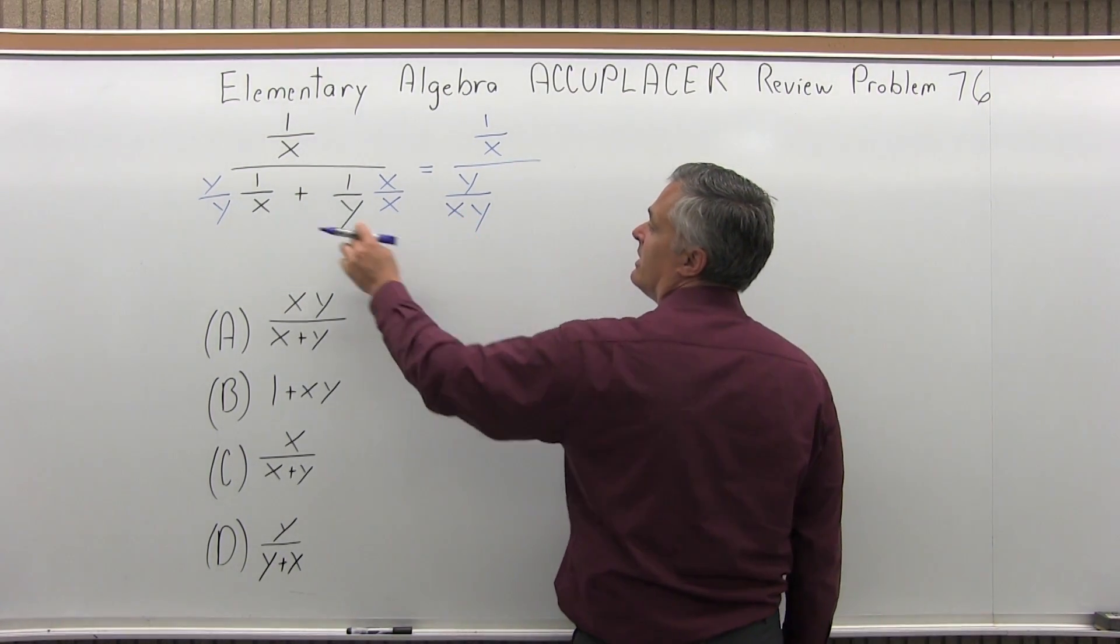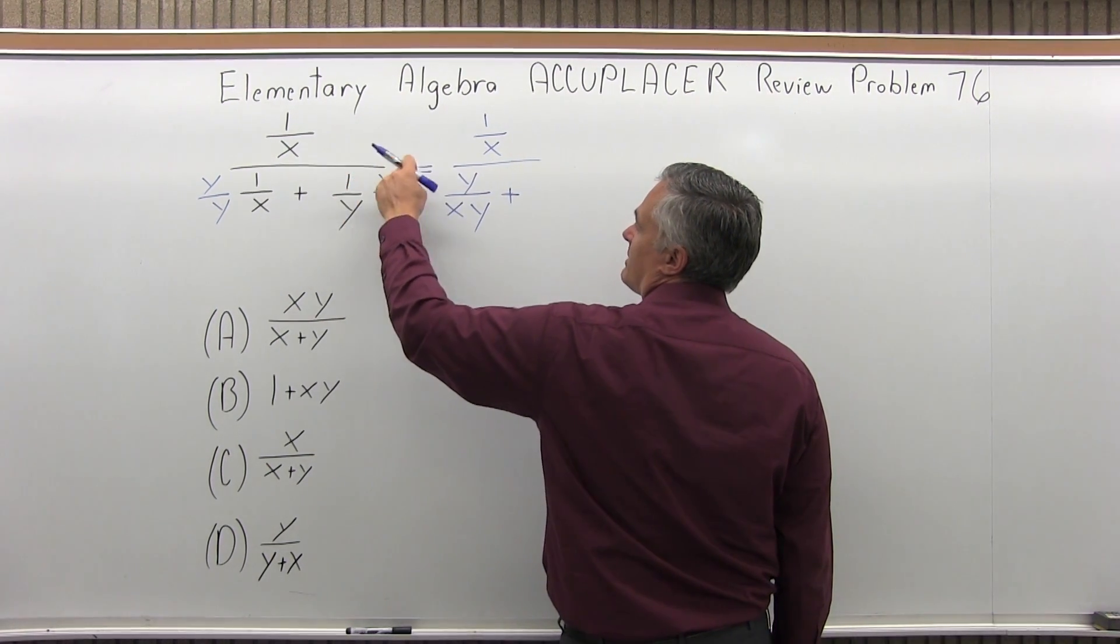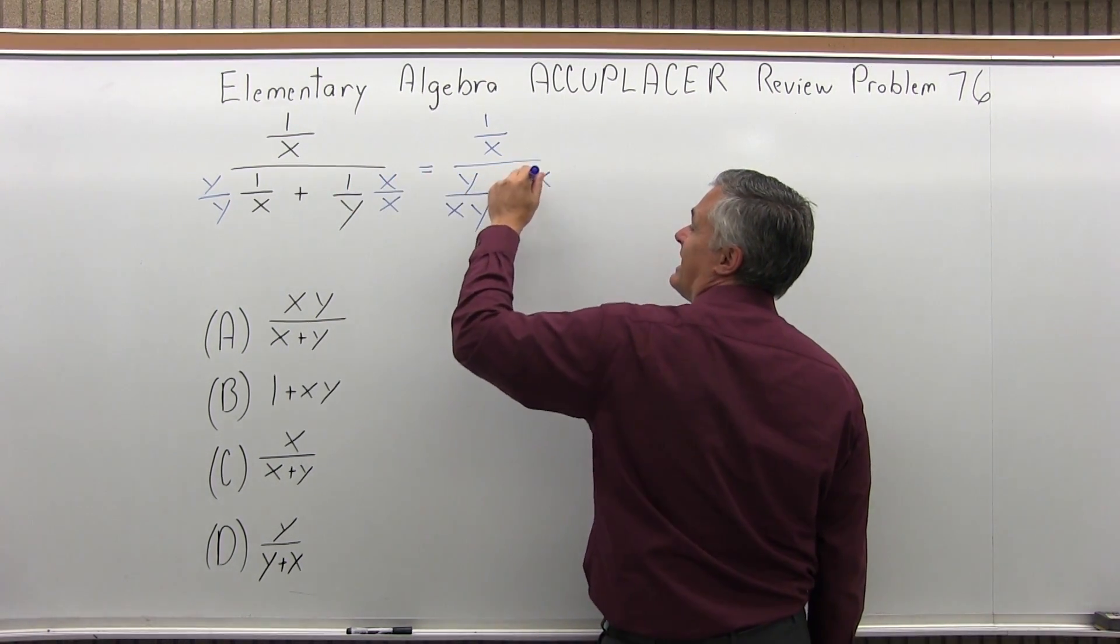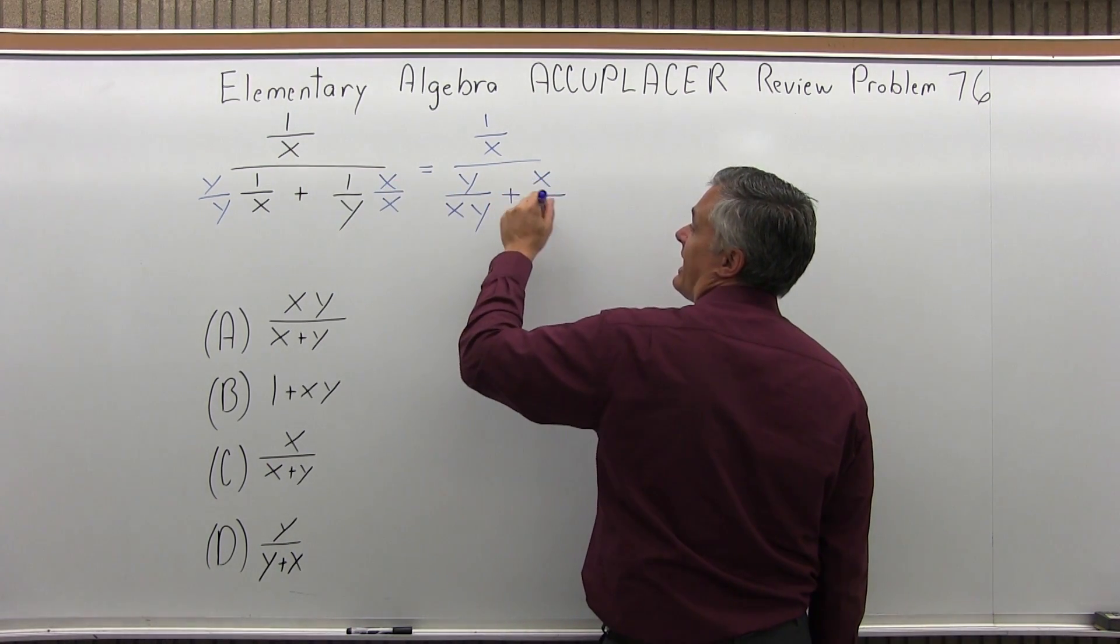Then plus, and now the second fraction, top times top, one times x is x. Bottom times bottom, y times x is yx, or again, xy. I like to keep it in the same order so it'll match up.